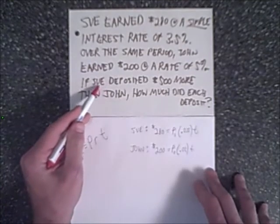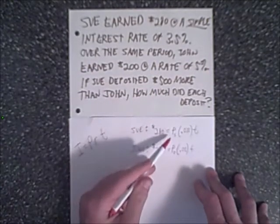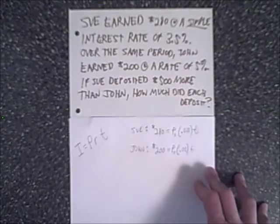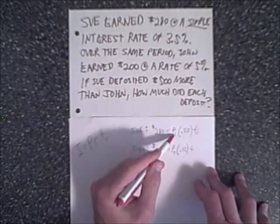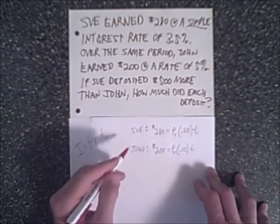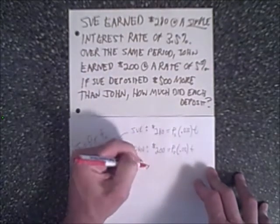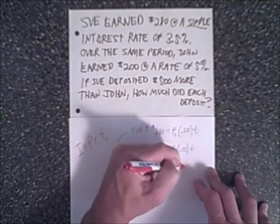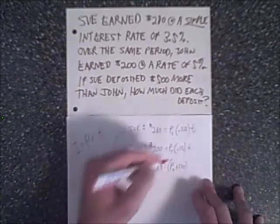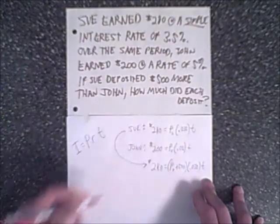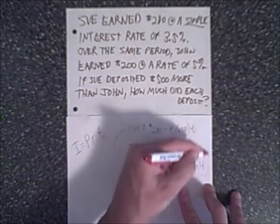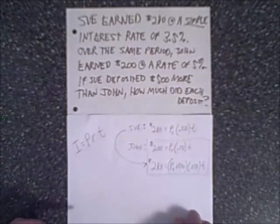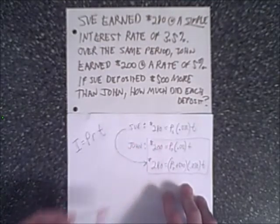Here's a big point right here. Sue deposited $500 more than John. Therefore, their principals are related to each other. So let's change Sue's principal amount, because I like to work with positive numbers. Let's make this amount $280 equals John plus $500 times 0.035T. So here are our two equations we're going to be working with. This is Sue, this is John. Notice how we have a lot of common variables, and we're simply going to look for how much they deposited.